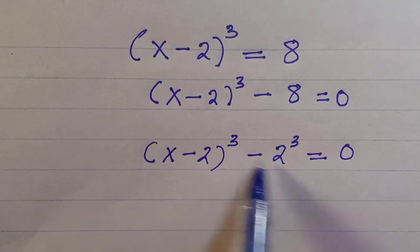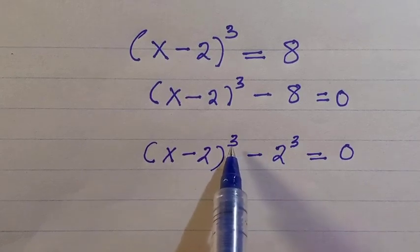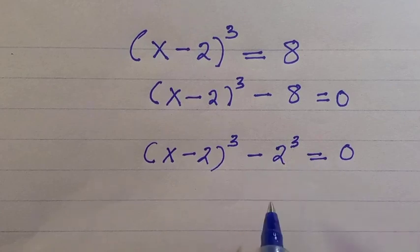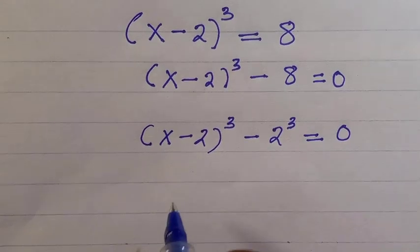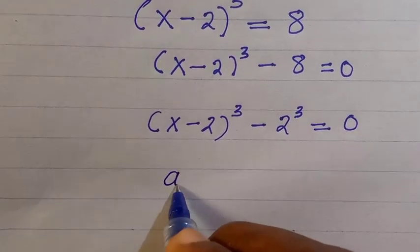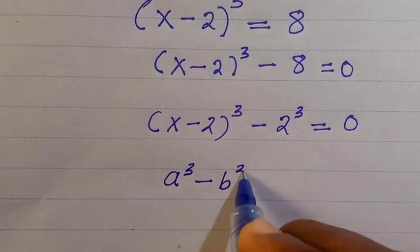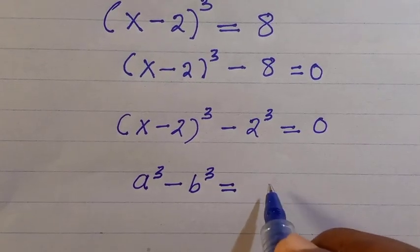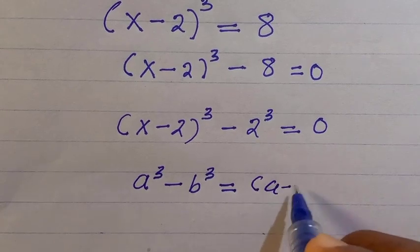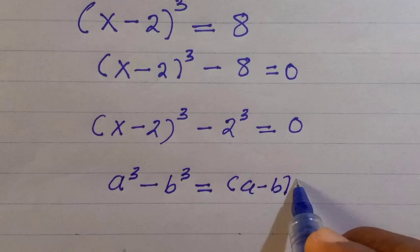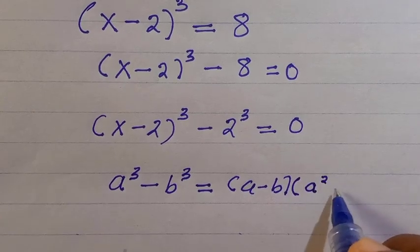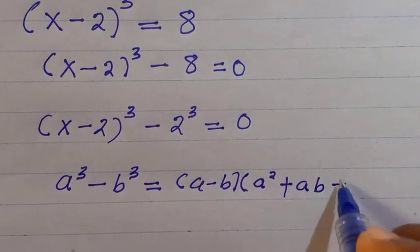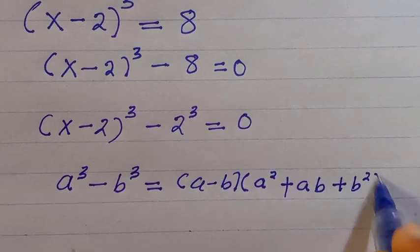Here x minus 2 takes the power of 3 and 2 takes the power of 3. We consider the algebraic identity: a to the power of 3 minus b to the power of 3 equals a minus b, times the bracket a squared plus ab plus b squared.